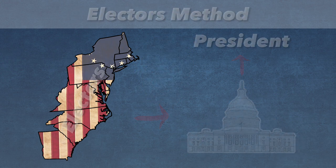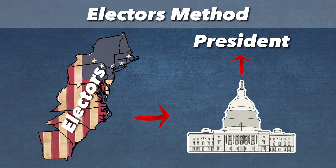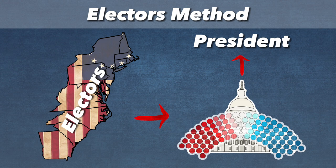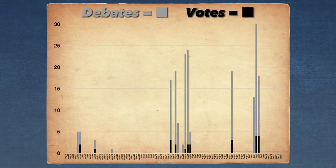And lastly, the electors' method would create a body of electors, the same size as the legislature, to meet at the seat of government, deliberate, and choose the president. The topic of choosing a president was tabled as the delegates focused on building the legislative branch, as seen in this gap in the data on the timeline.